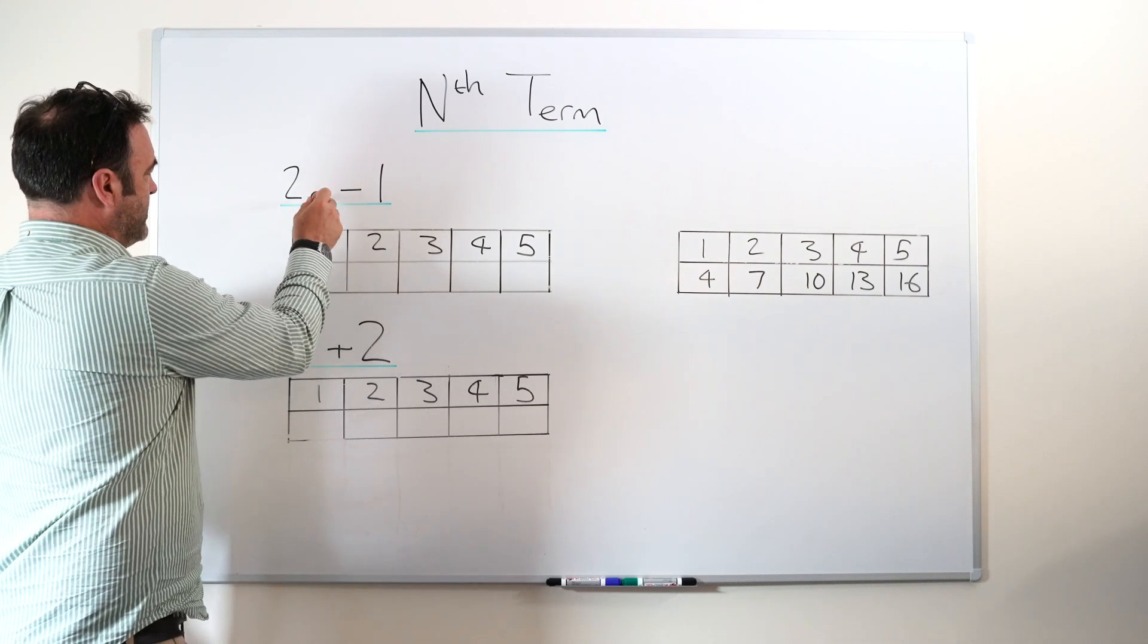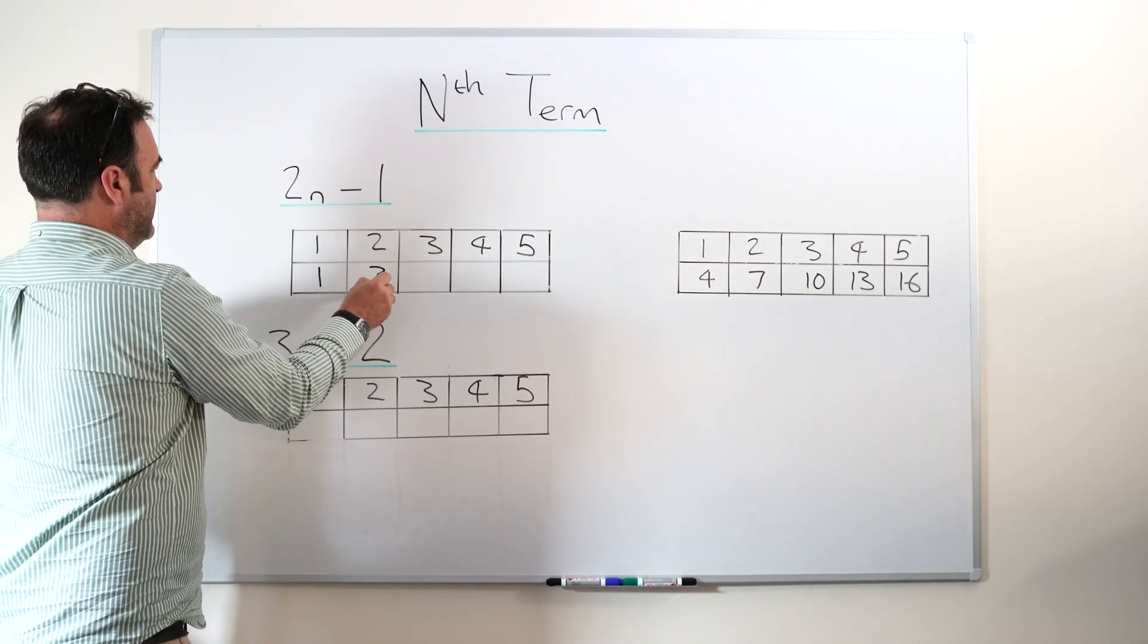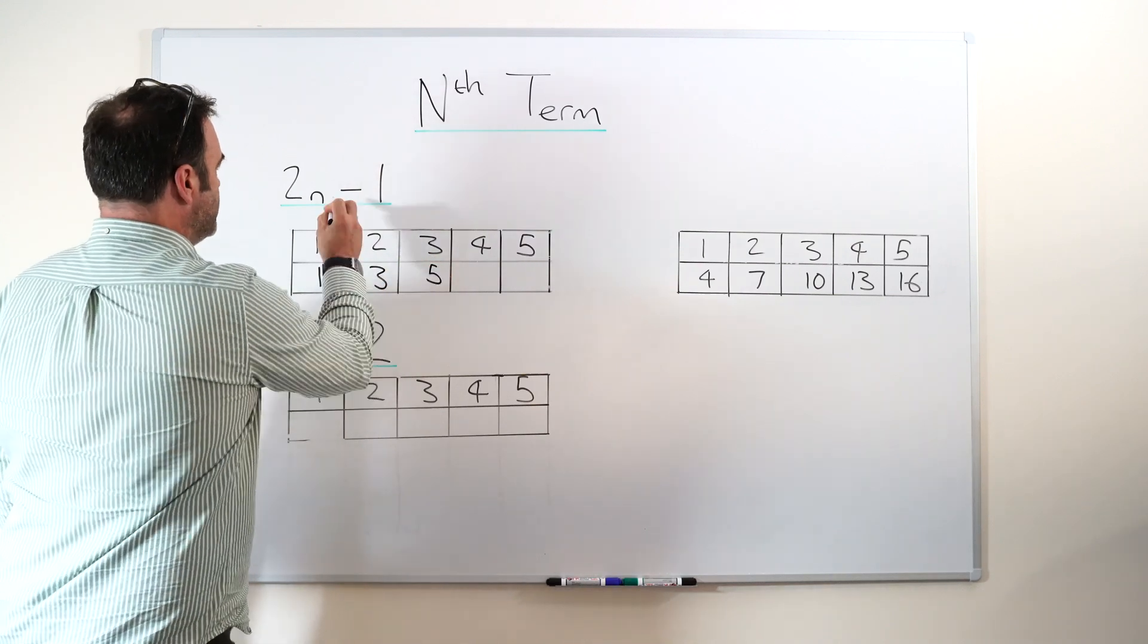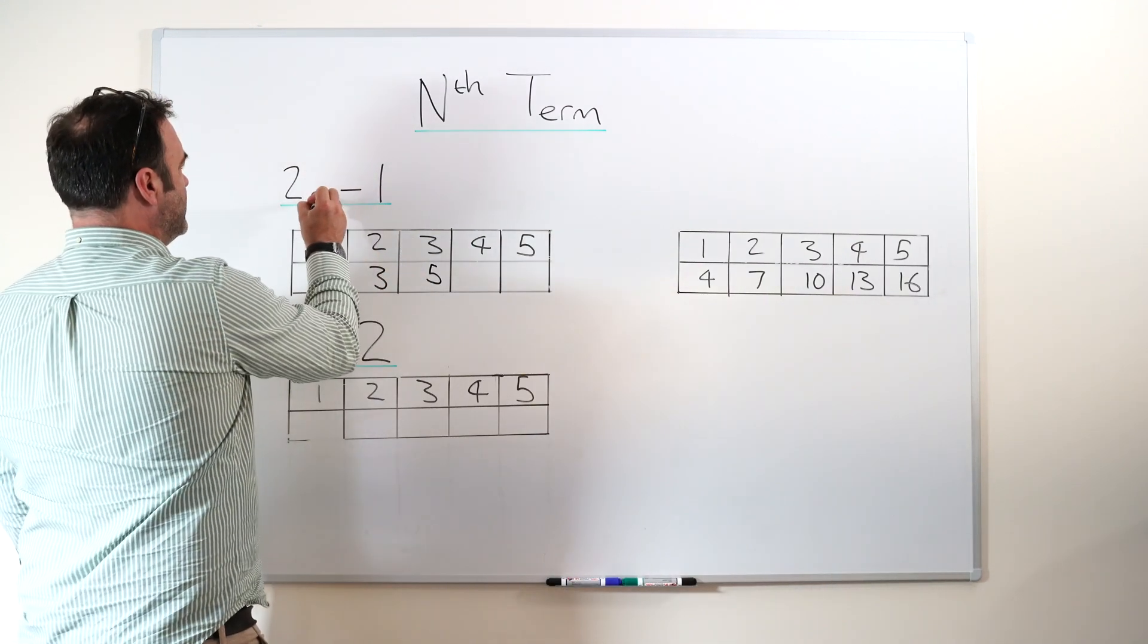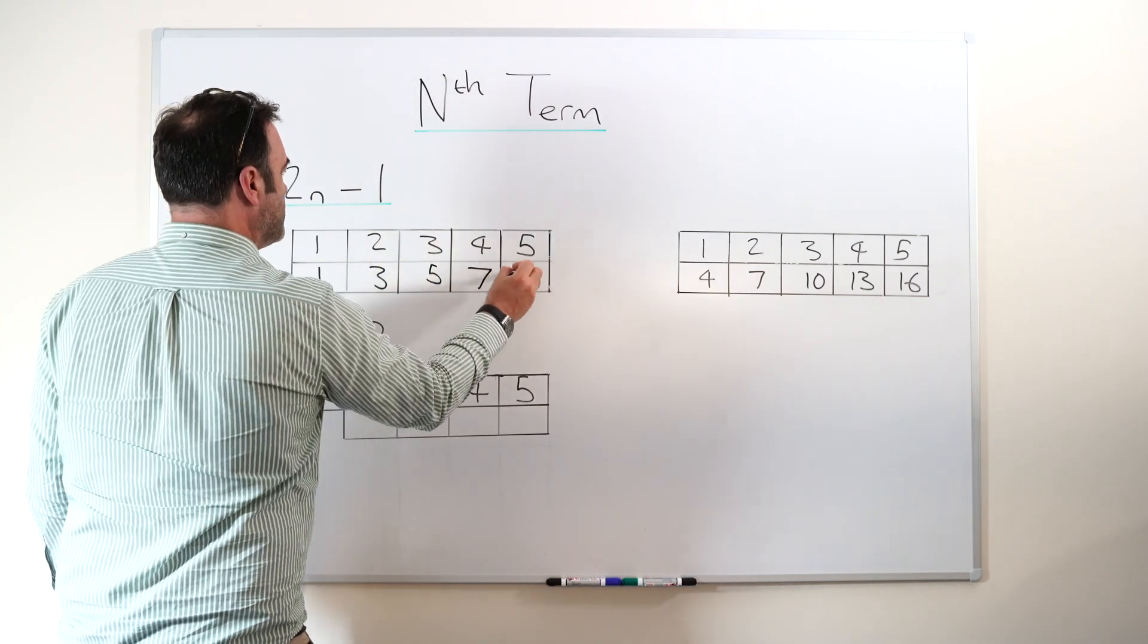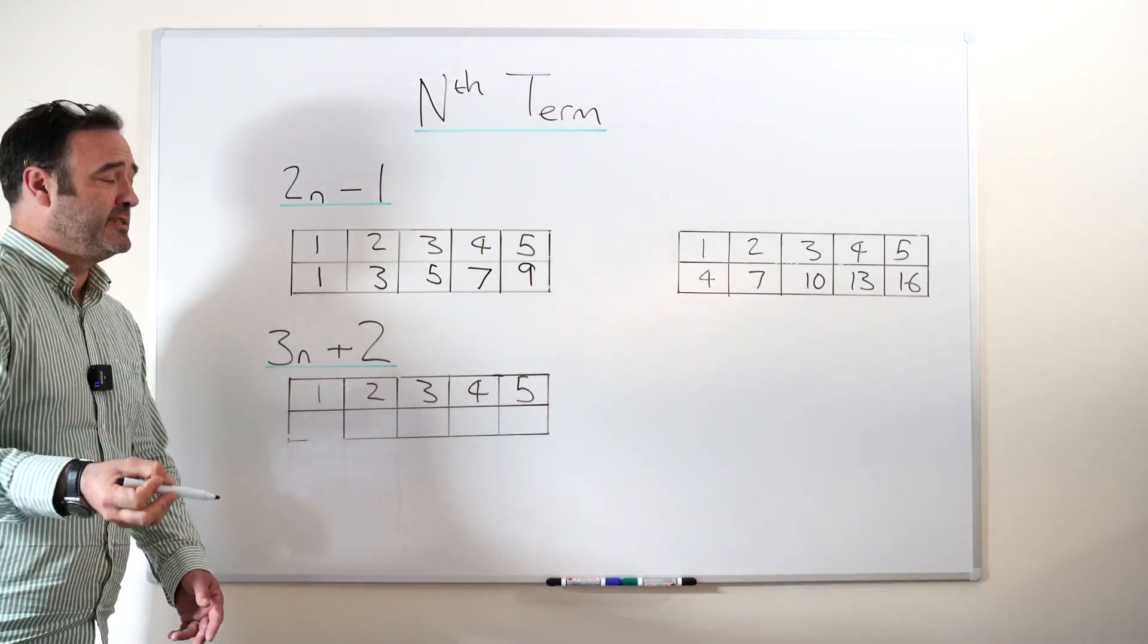When n is two, two times two is four, minus one is three. Two times three is six, minus one is five. Two times four is eight, minus one is seven. Two times five is ten, minus one is nine. So it's pretty straightforward as you can see.